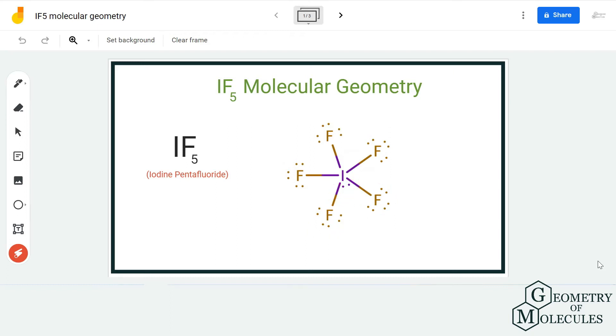When we are determining molecular geometry of any molecule, we take into consideration all these points to come to a correct assumption. If you look at its shape, the shape here seems to be square pyramidal because of the arrangement of fluorine atoms.